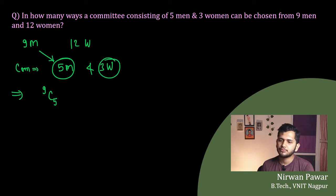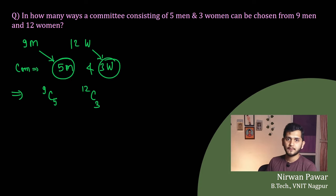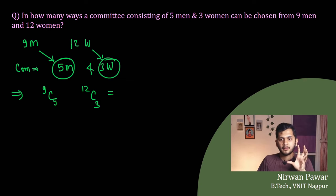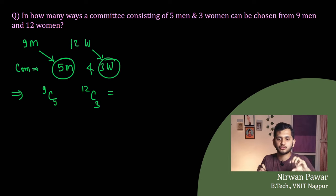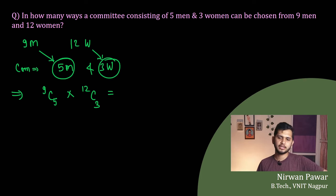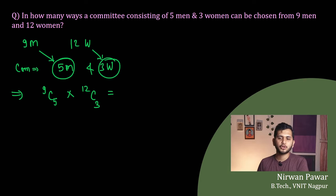To form this committee, I need to select five men from nine and three women from twelve. If you remember from the combination video, when you select people for a committee you use combinations. So this is 9C5 for men and 12C3 for women, and therefore there will be a multiplication sign — this goes back to the rule of multiplication. So it will be 9C5 into 12C3.